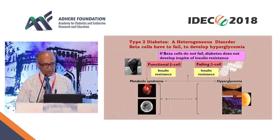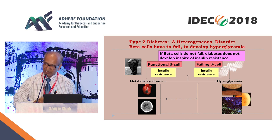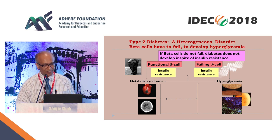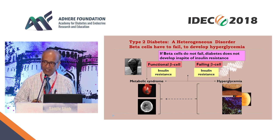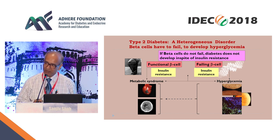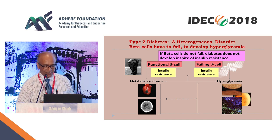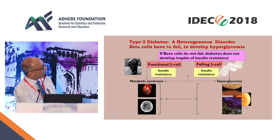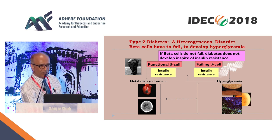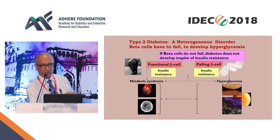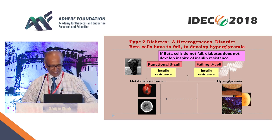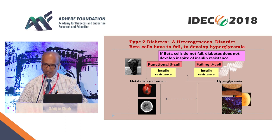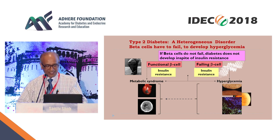Type 2 diabetes is a heterogeneous disorder and beta cells have to fail to develop hyperglycemia — otherwise it would not happen. You would have all features of metabolic syndrome but no hyperglycemia if beta cells continue to function. So the question is: how do they fail?